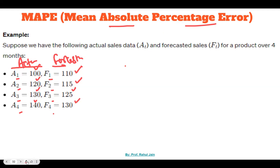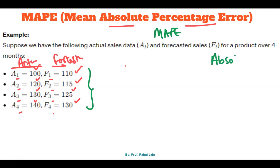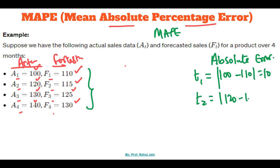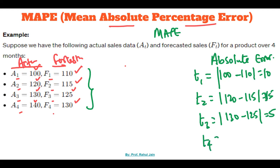Now we need to figure out the mean absolute percentage error. Before going to MAPE, we first need to figure out the absolute errors. The absolute error at time t1 (month one) is 100 minus 110, which is 10. In month two, the absolute error is 120 minus 115, which is 5. In month three, the absolute error is 130 minus 125, which is 5. And in month four, the absolute error is 140 minus 130, which is 10.